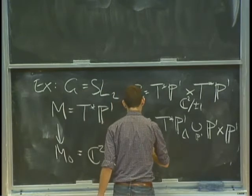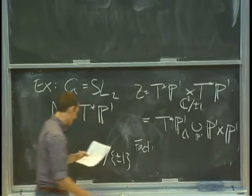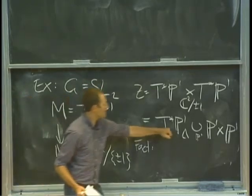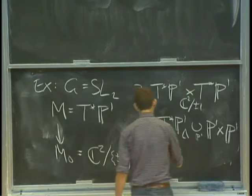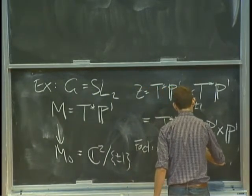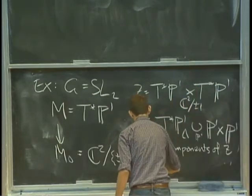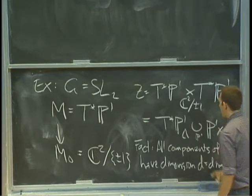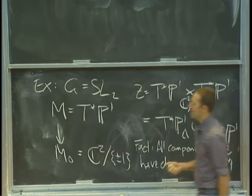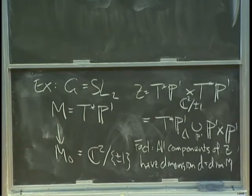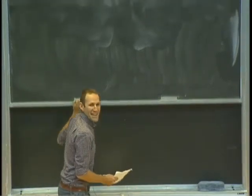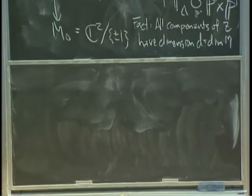A general fact which appeared in Victor's lectures: the Steinberg variety Z is always going to have multiple components — here it has two irreducible components. They're all going to have the same dimension, equal to the dimension of M, and I'll call it d. One component of Z is always the diagonal copy of M. The statement that all components have dimension d is what it means for the map from M to M0 to be strictly semi-small.